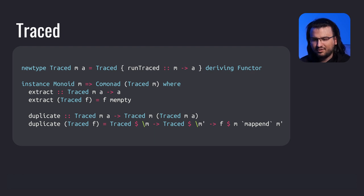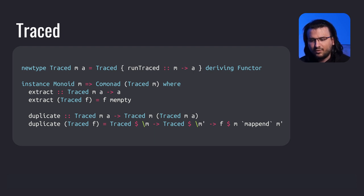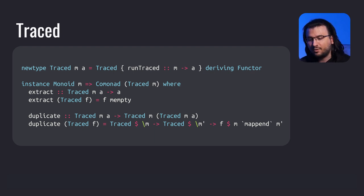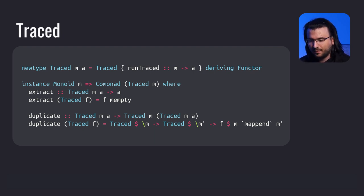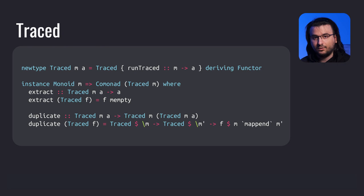Exhibit B: the traced comonad. It encapsulates a function from m to a, building up a result by prepending monoidal values to each other. In the monad instance for the writer data type, we needed the output accumulator type to have a Monoid instance — the same goes here for the type of argument in the comonad instance. Basically, extract accepts a function from m to a and returns an a; at this stage we don't have a value of type m, but with the Monoid instance we can pass mempty. Moreover, duplicate accepts a function from m to a and returns a function from two values of type m to a — but we need only one value of type m, so just mappend those arguments (called m and m') and pass the result to the function f.